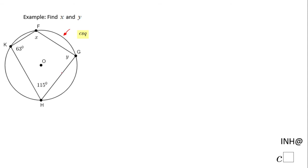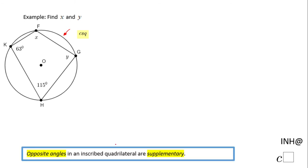For that reason, we have a very important property which is right here: opposite angles in an inscribed quadrilateral are supplementary. Let's take a look here and see those inscribed angles.